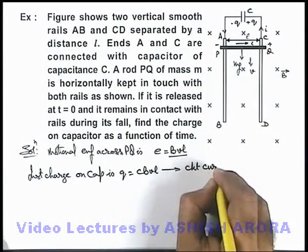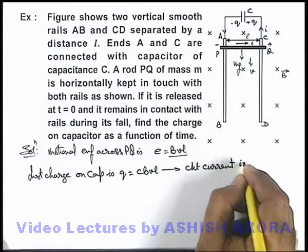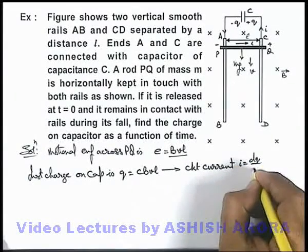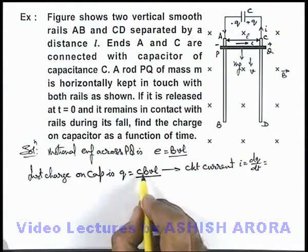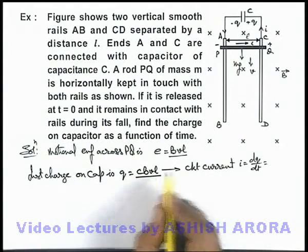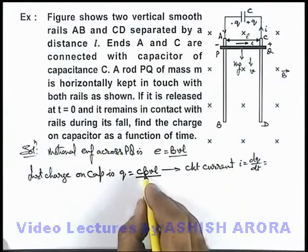Circuit current can be directly given as i equals dq by dt. And on differentiating this expression, here you can see C, B, and l are constants.